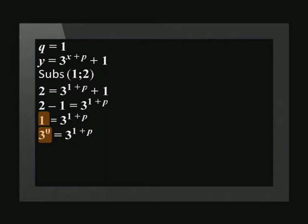So we rewrite the equation as 3 to the power of 0 equals 3 to the power of 1 plus p. We equate the exponents to each other which gives us 0 equals 1 plus p. p equals negative 1.